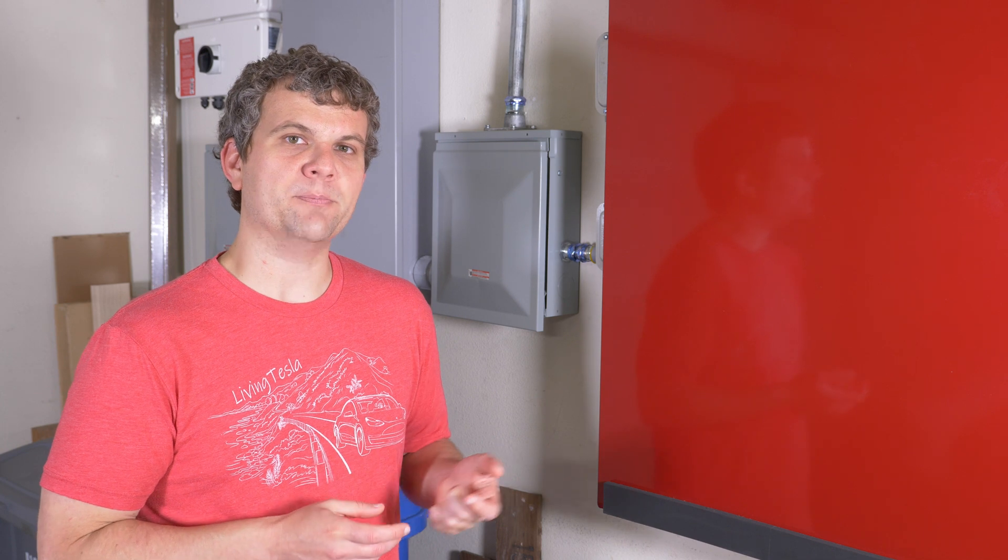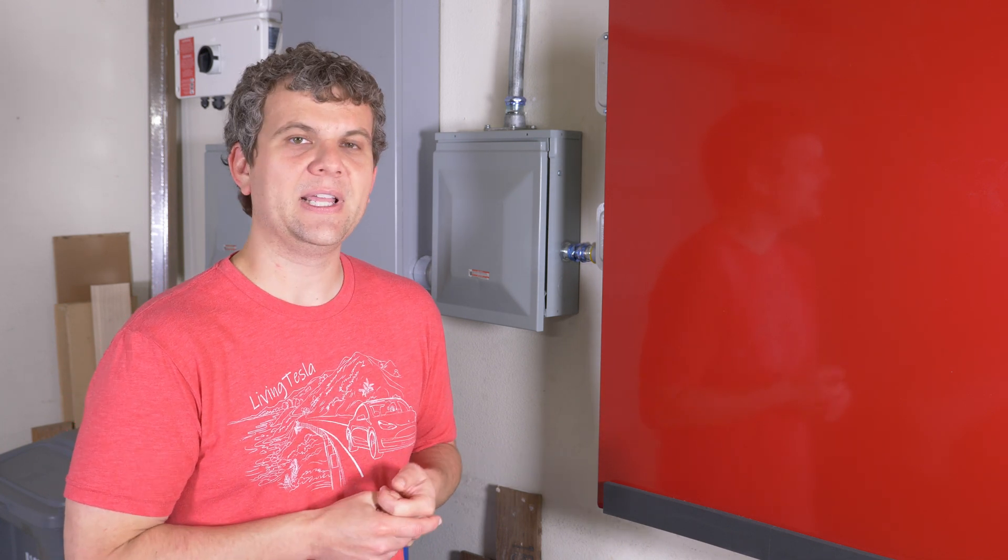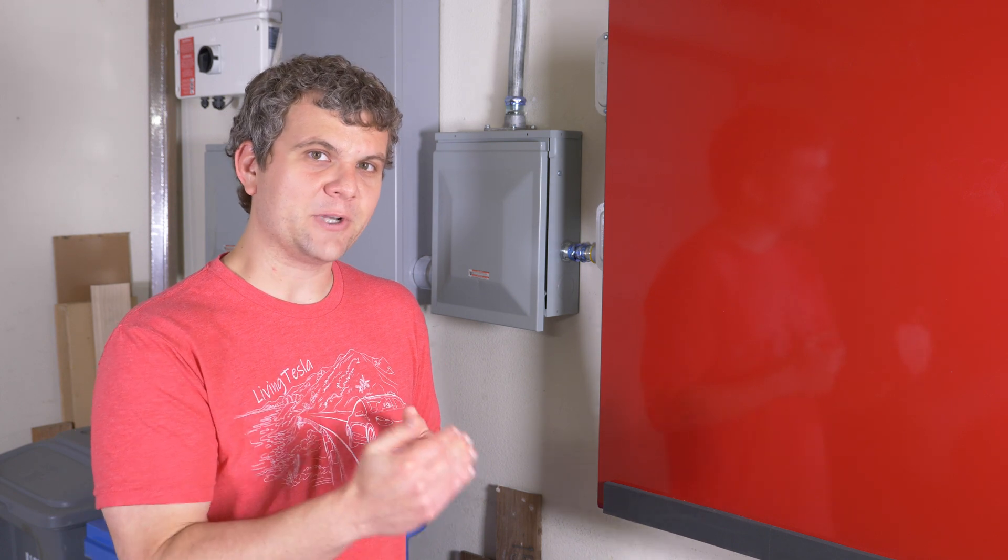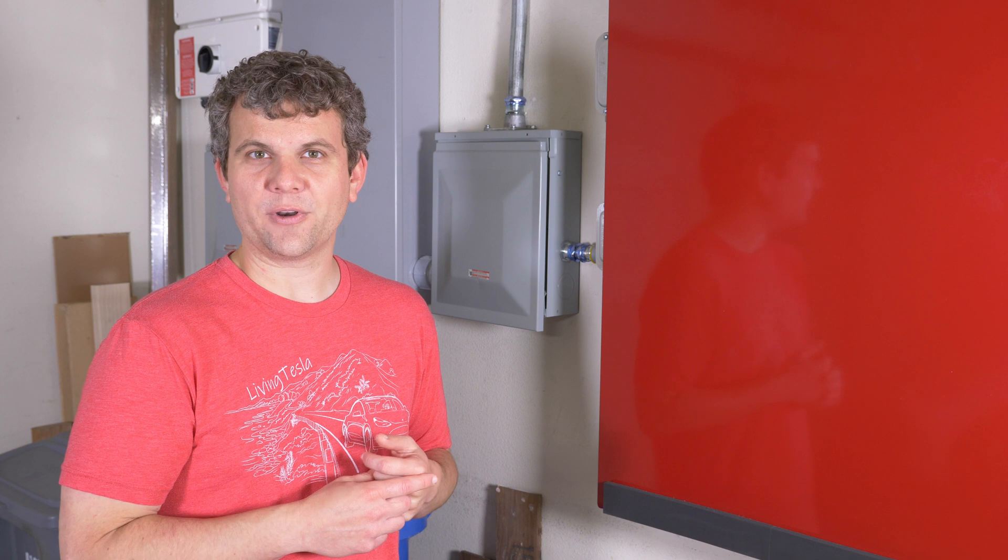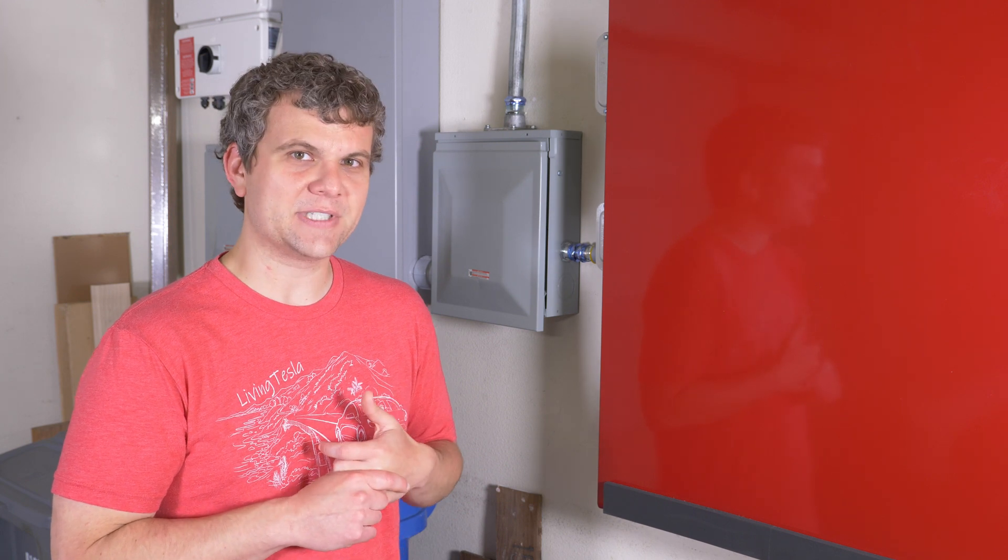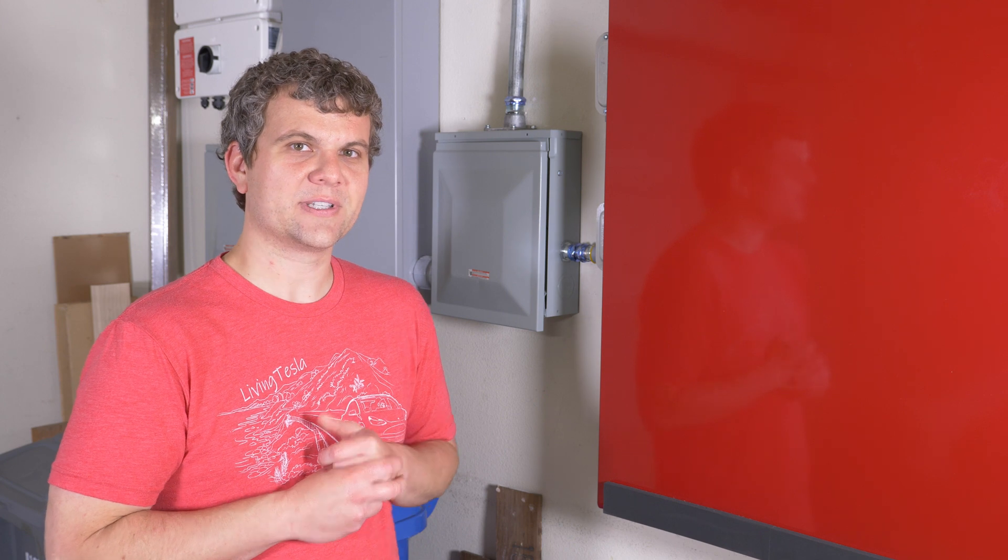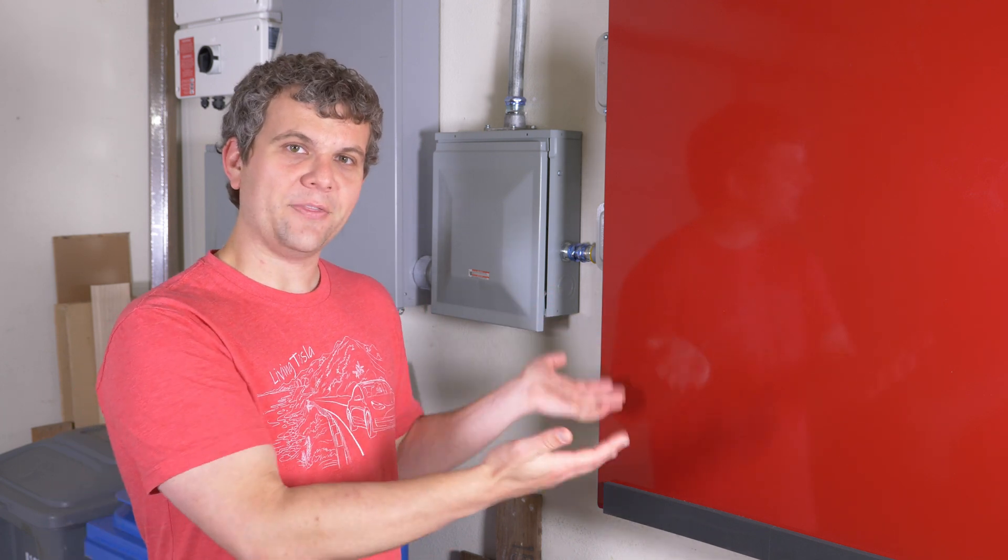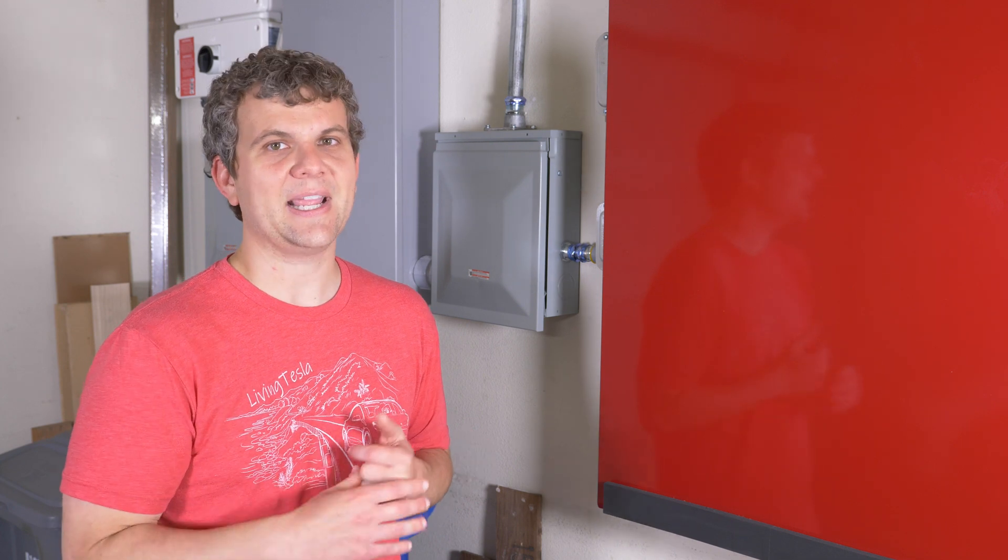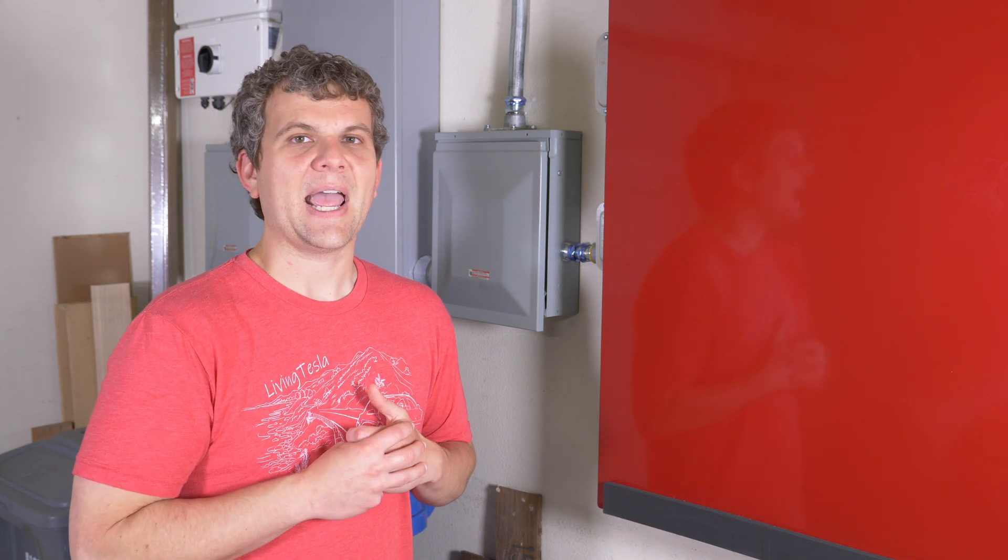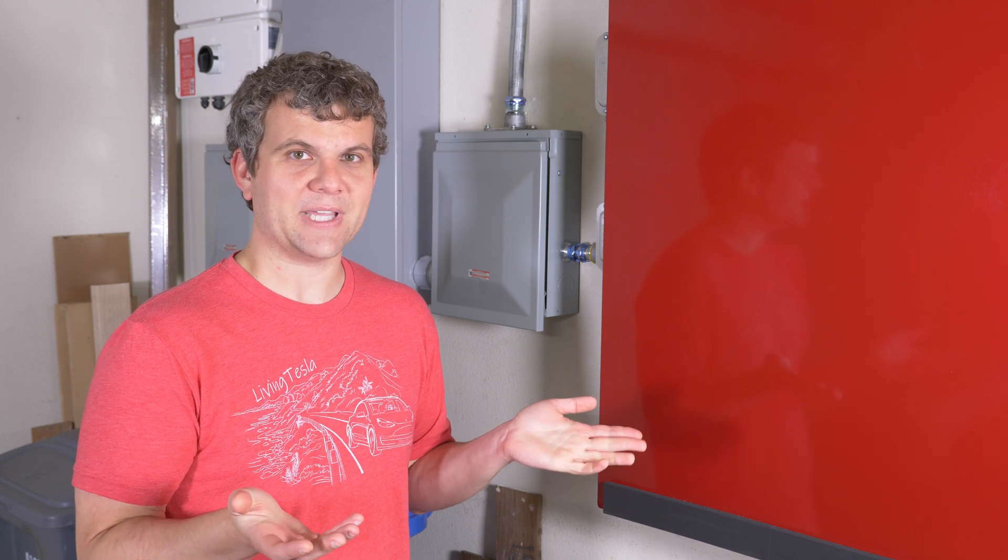They asked me which model of UPS I have and they asked me to look in the manual and see what its high frequency setting was. And for mine, it's a CyberPower 1350 PFC LCD and its high set point is 62 Hz. So supposedly they've changed my system now to go to 62 Hz instead of 65 Hz, and they asked me to test and see if the UPSs are now happy with that.